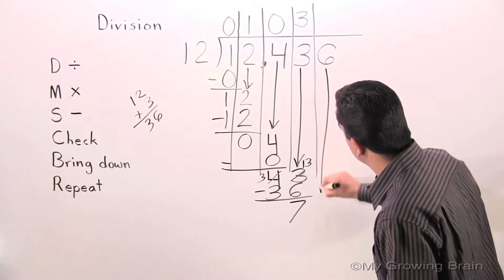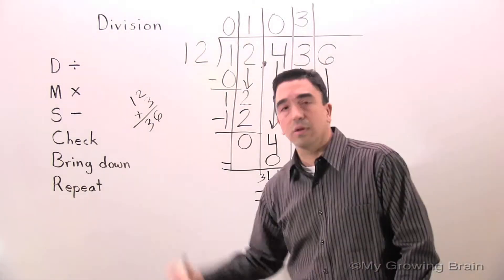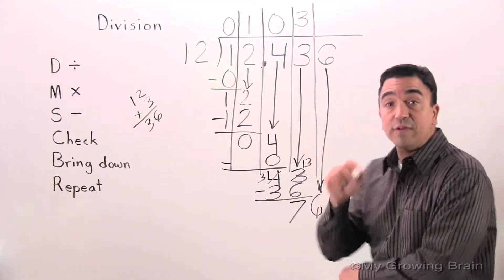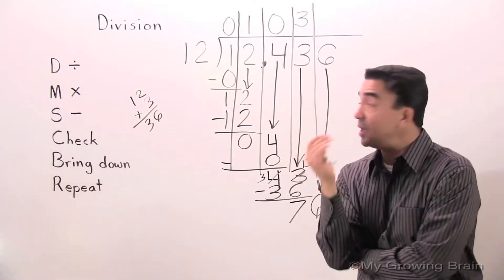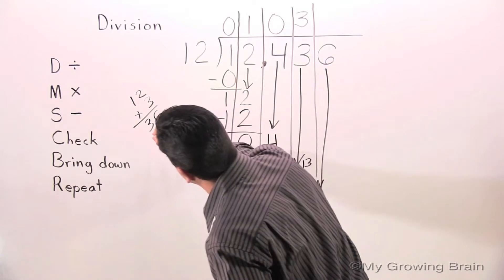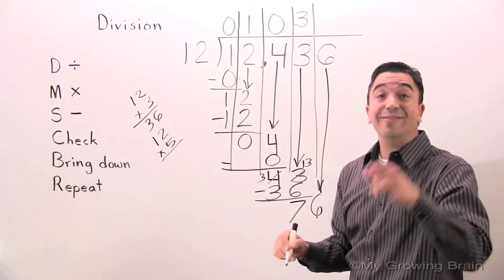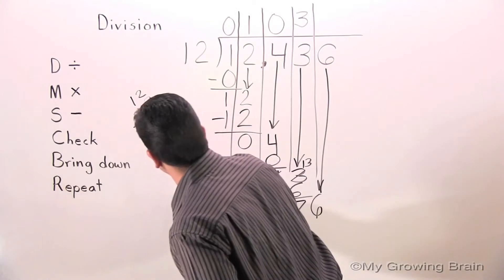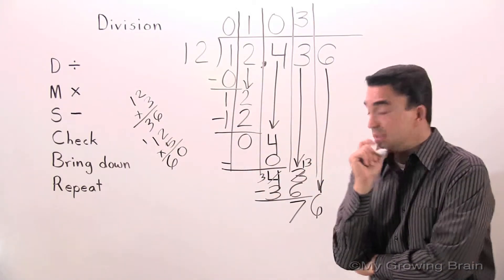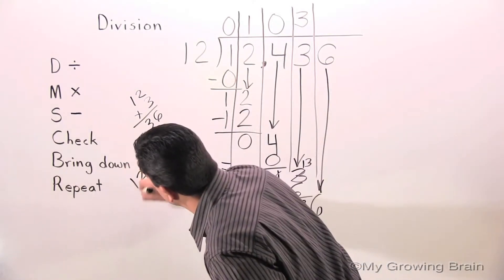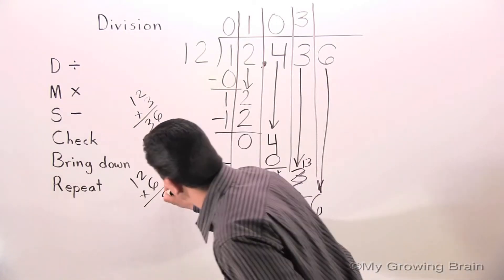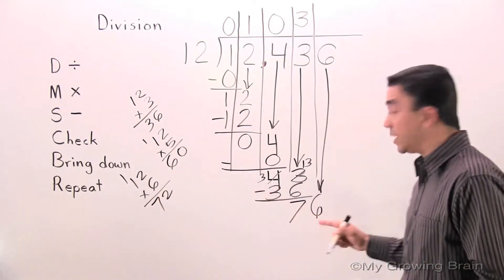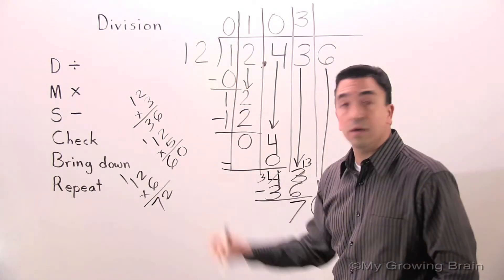Bring down. Repeat the process all the way back up to divide. 76 divided by 12. I tried 12 times 3, now I'll try 12 times 5, then 12 times 6: 6 times 2 is 12, regroup the 1, 6 times 1 is 6, plus 1 is 7 — that gives 72. 72 is really close to 76, so 12 goes into 76 six times.